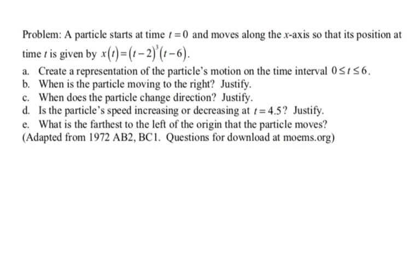And let's take a look at the problem we're going to do. So a particle starts at time t equals 0 and moves along the x-axis so that its position at time t is given by x(t) equals the quantity (t minus 2) cubed times the quantity (t minus 6).